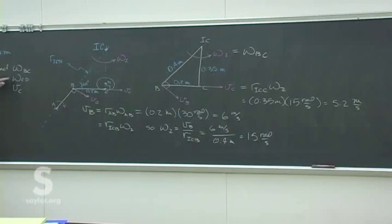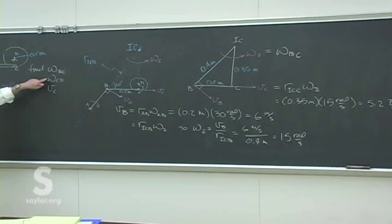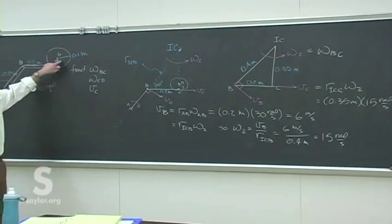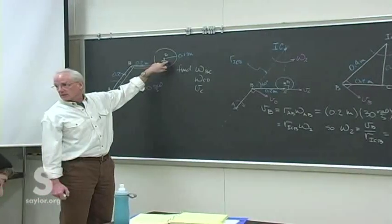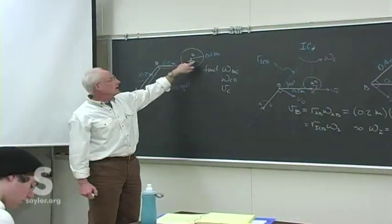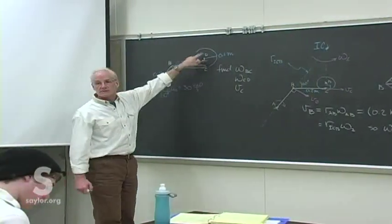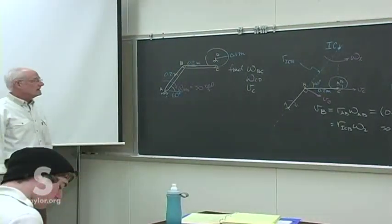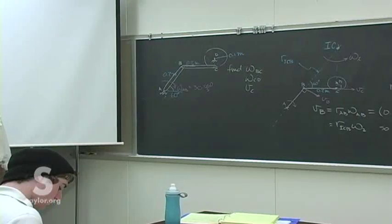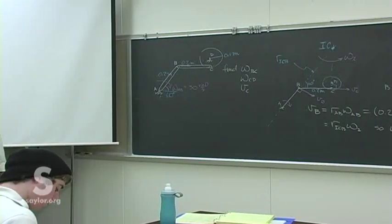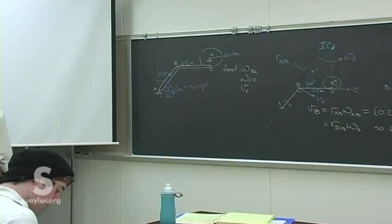For the angular speed of CD — the wheel — we did that as pure rotation about point D, and that's why you needed the radius of that wheel. So which of the three methods is your favorite?